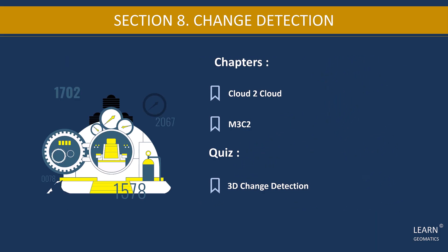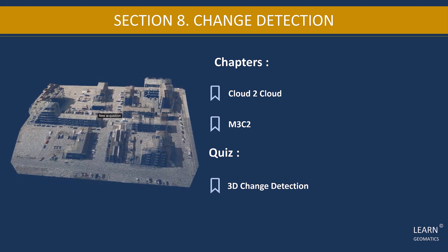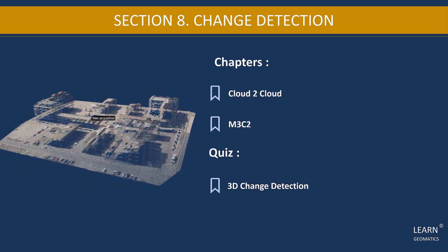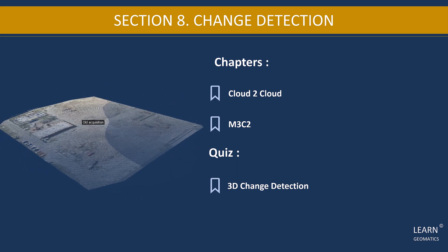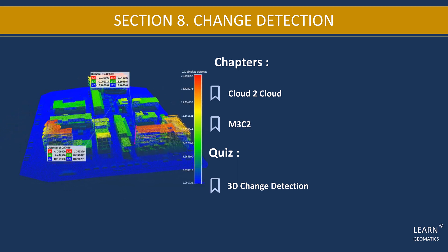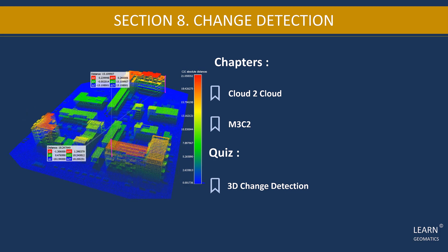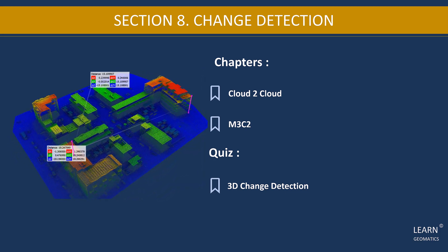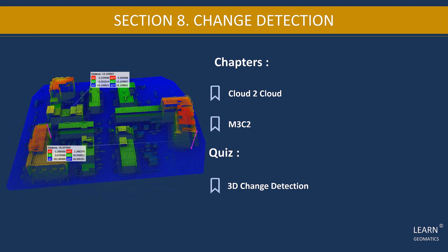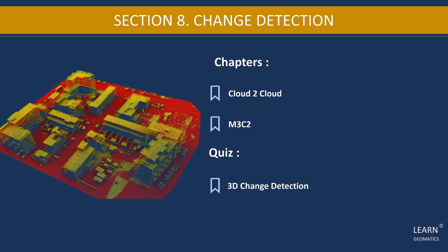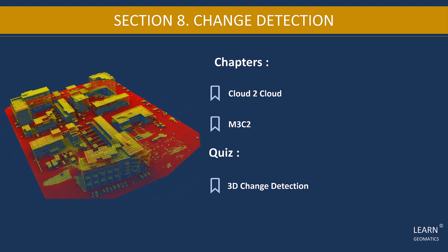In this section, we will focus on change detection. We will explore two methods to detect changes in Point Clouds: the first method is Distance Calculation Cloud to Cloud, and the second is M3C2. We will also learn how to quantify the change range — for example, measuring the height of a new building. By the end of this section, you will be able to apply these techniques to detect changes in your own Point Cloud data. As always, there will be a quiz to test your knowledge on the topic.